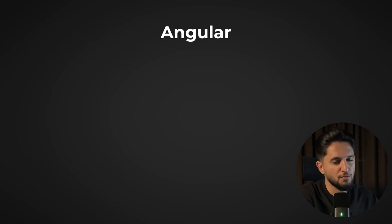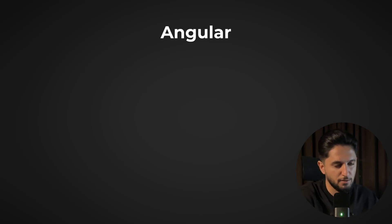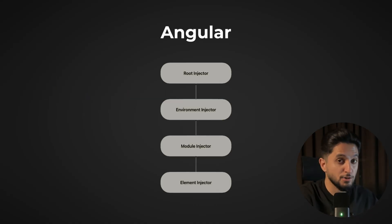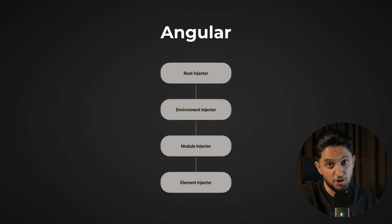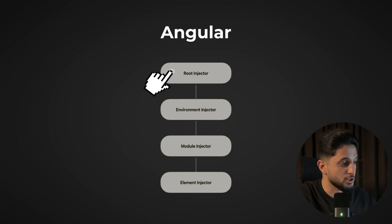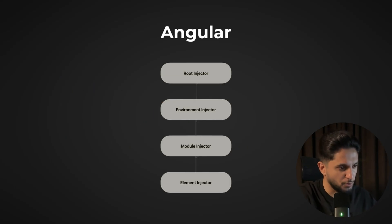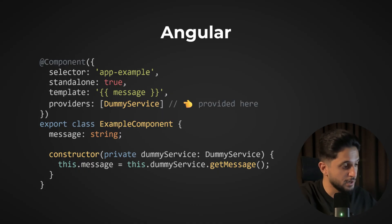In Angular, dependency injection looks very similar to the backend but adapted to the frontend. Instead of beans you have services, and instead of @Component or @Service you use the @Injectable annotation, which tells Angular this class can be injected into other classes. Unlike Spring, Angular doesn't have one big container — it has multiple DI containers called injectors. There is a root injector (singleton shared everywhere), and an element injector per component when you provide the service in the providers array.